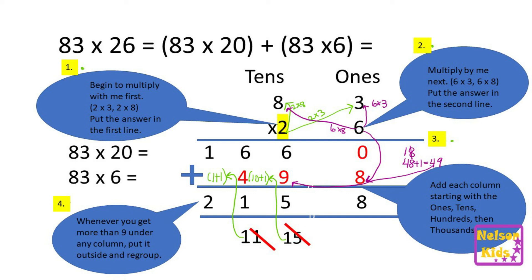If it falls under the ones, then you are regrouping that number. If you got 15, into tens and ones. If it falls under the tens, you will have to regroup that number into hundreds and tens. If it falls under the hundred, you will have to regroup that number into thousands and hundreds.